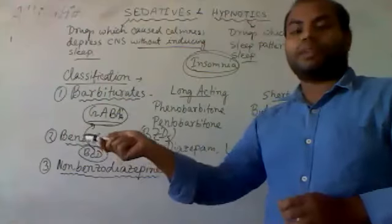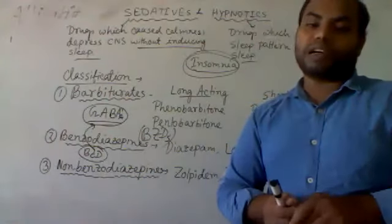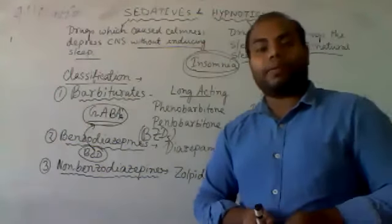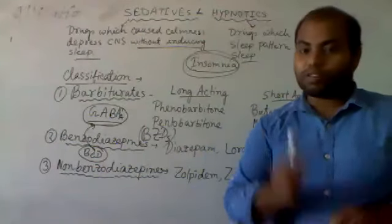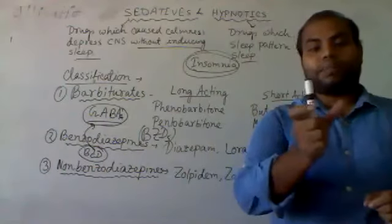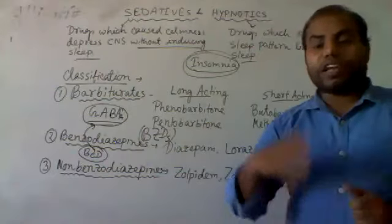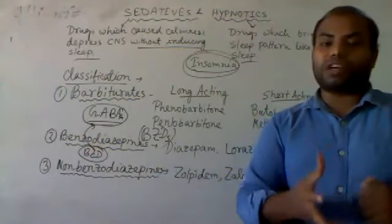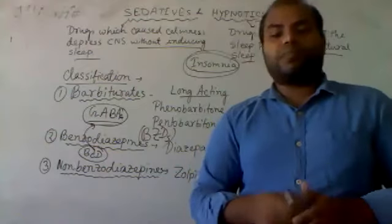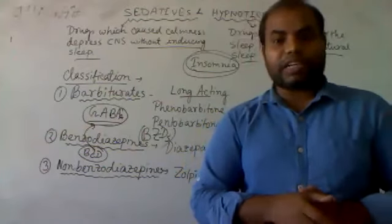Non-benzodiazepine hypnotics bind to the GABA-A receptor but selectively target the alpha subunit in particular areas. Examples include zopiclone, zolpidem, and zaleplon. They also cause chloride channel opening in a similar process, and the action potential is reduced due to the hyperpolarization state.